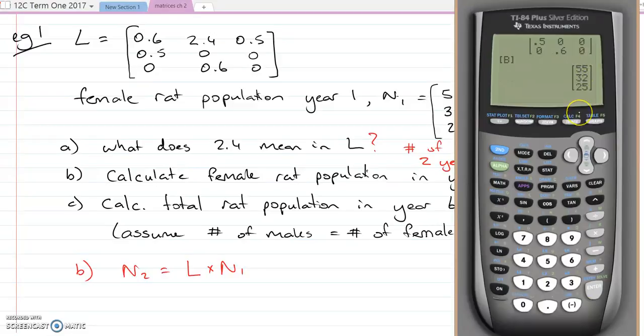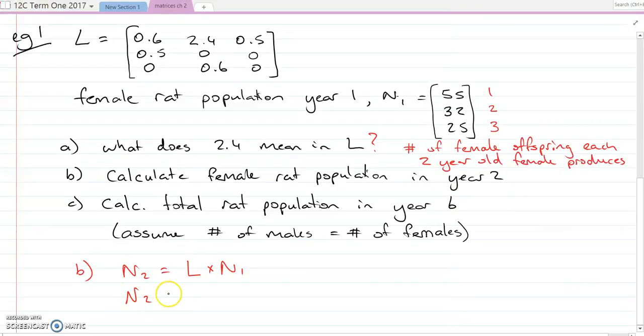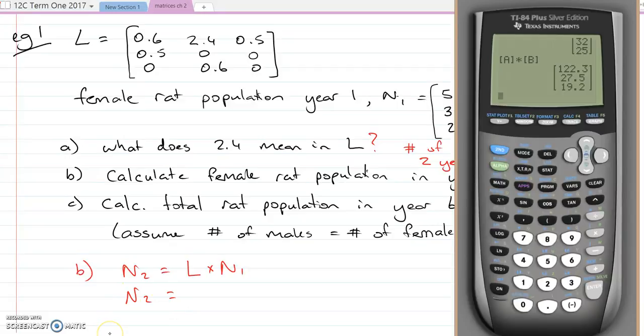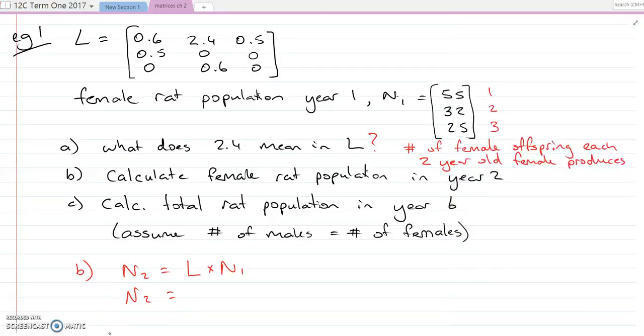So I just need to times matrix one times matrix two, and so I get N2 equals 122.3, 27.5, 19.3.